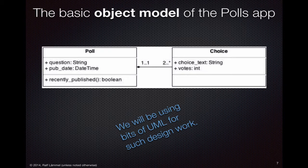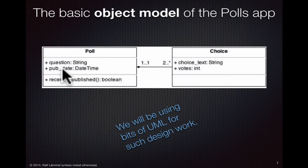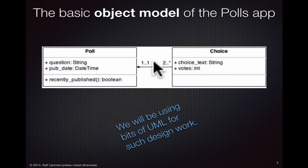Let's look in a bit more detail at the Poll application — this also gives you a sense of the kinds of things we do in the course. Here I show you a UML diagram for the object model at the most basic level behind the Poll application. We have two classes: the Poll class and a Choice class. A Poll has a question string and a publication date; a Choice has a choice string and the number of votes. We also define the cardinalities in how these two classes are associated. We could be using UML in the design phase of our application.